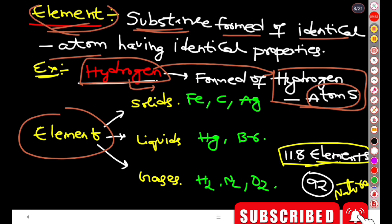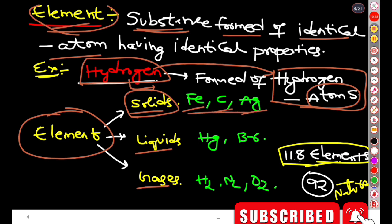Another example: oxygen element has oxygen atoms — this is an element. Elements can exist in three physical forms: solid form, liquid form, and gaseous form. Examples of solid elements are iron, copper, and silver.